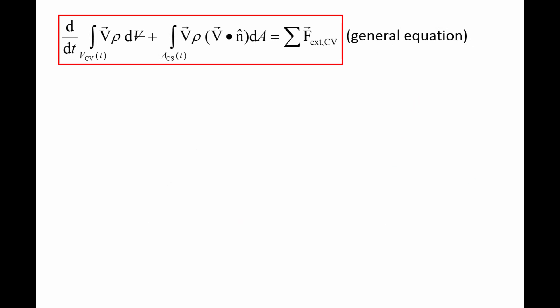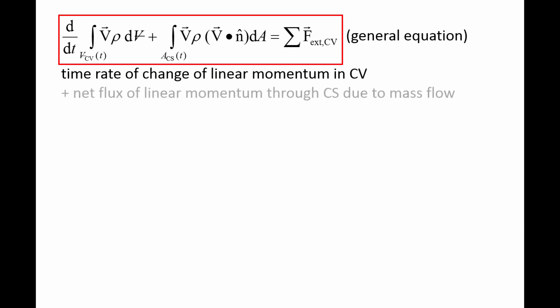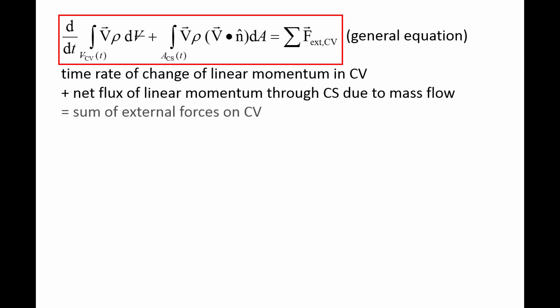We now have the general conservation of linear momentum equation for a control volume. The equation states that the time rate of change of linear momentum in the control volume plus the net flux of linear momentum through the control surface due to mass flow is equal to the sum of the external forces acting on the control volume. This equation is valid for control volumes that are fixed and rigid, moving at a constant velocity, and/or deforming.